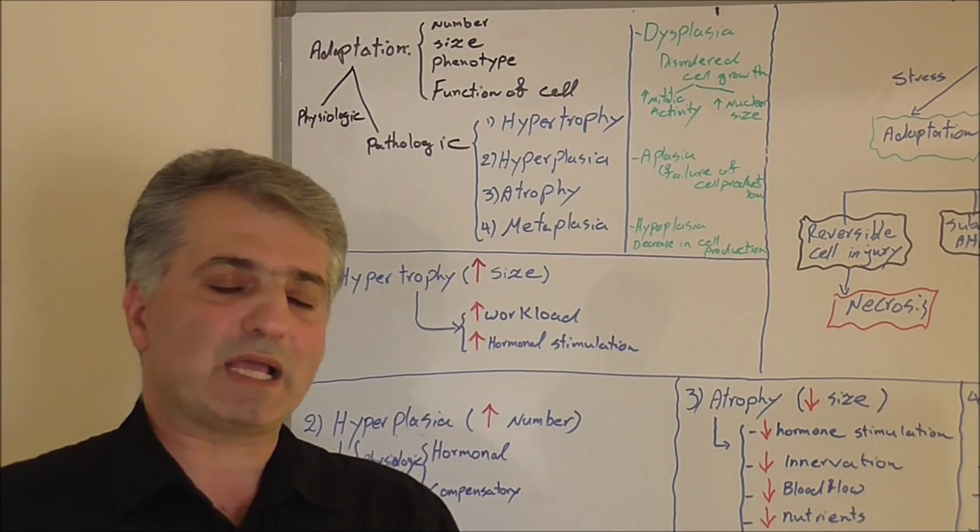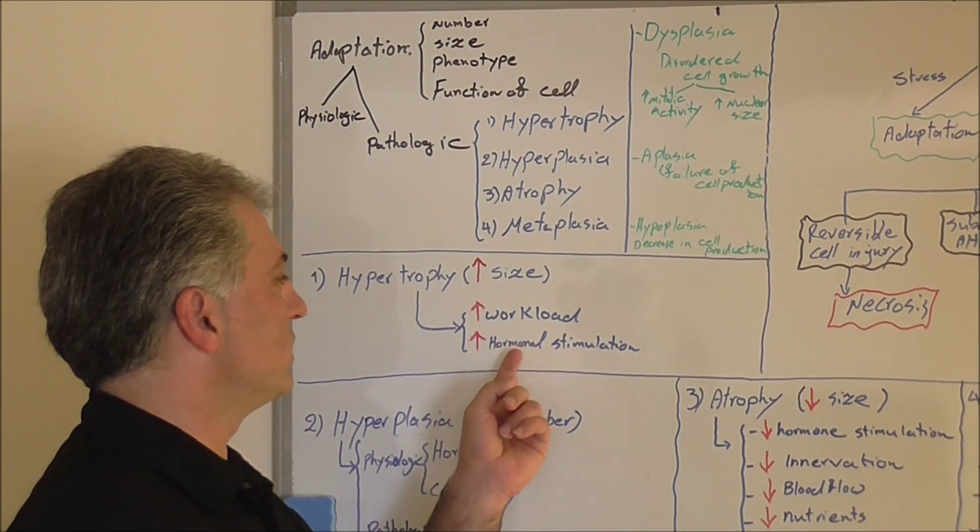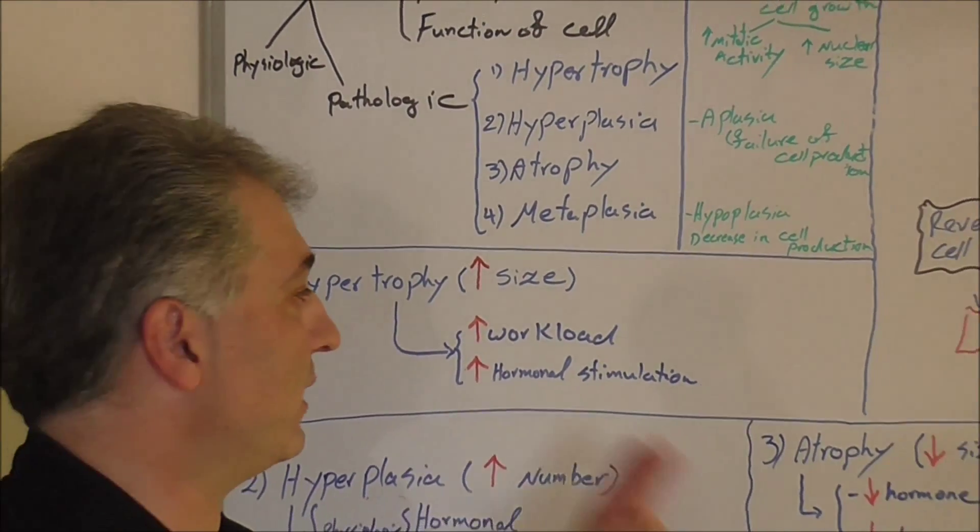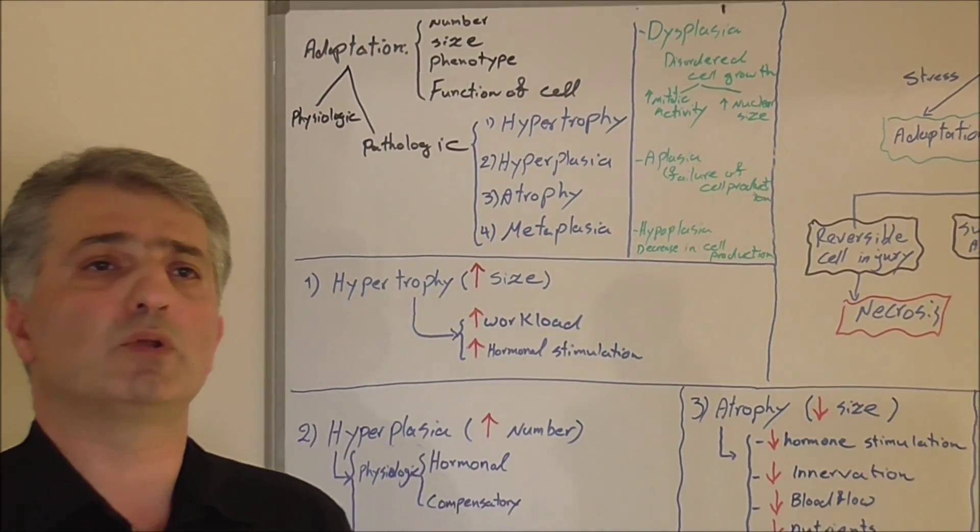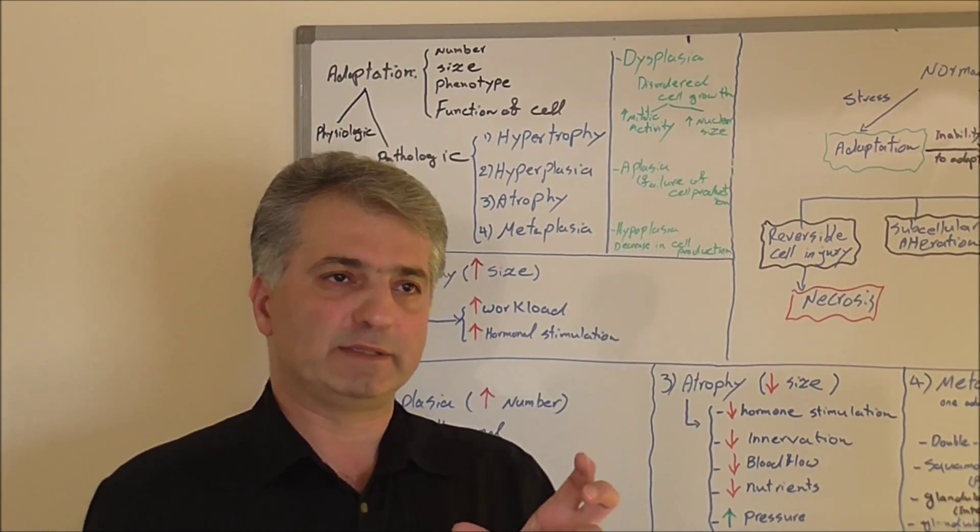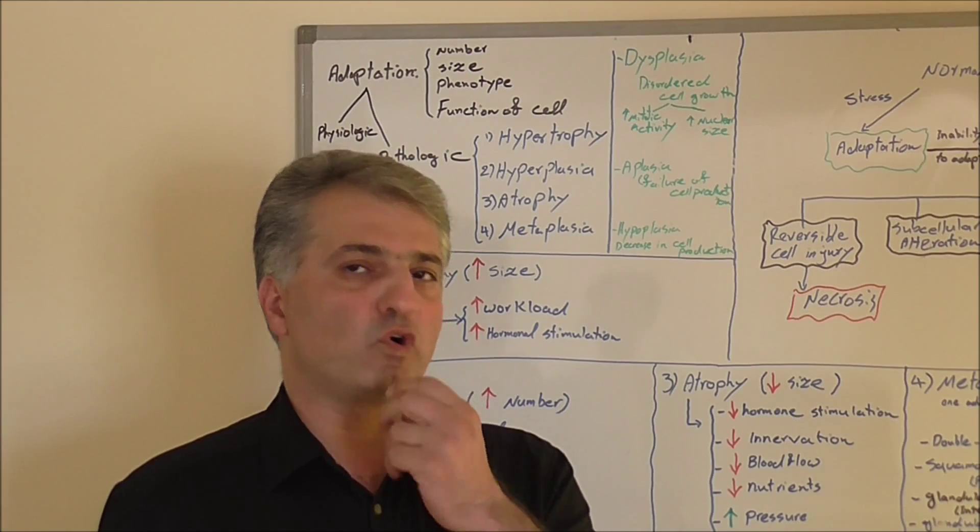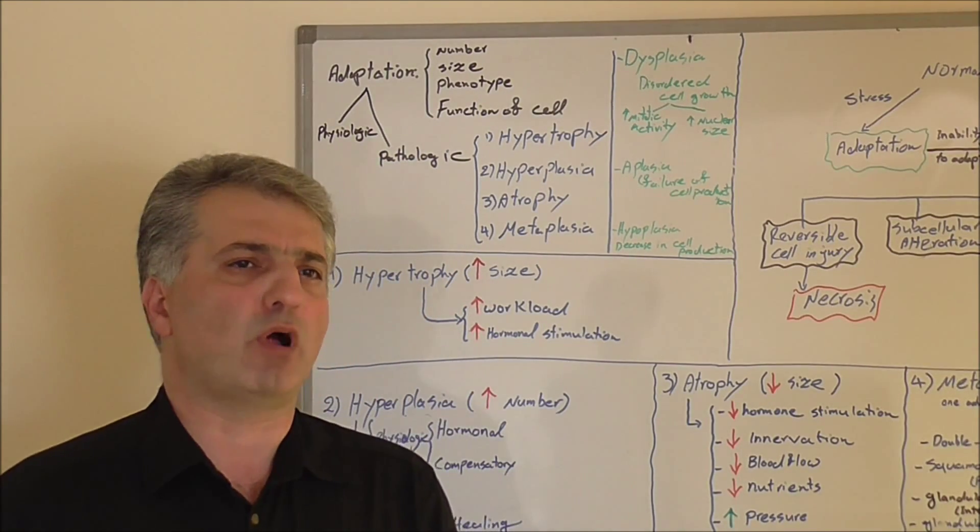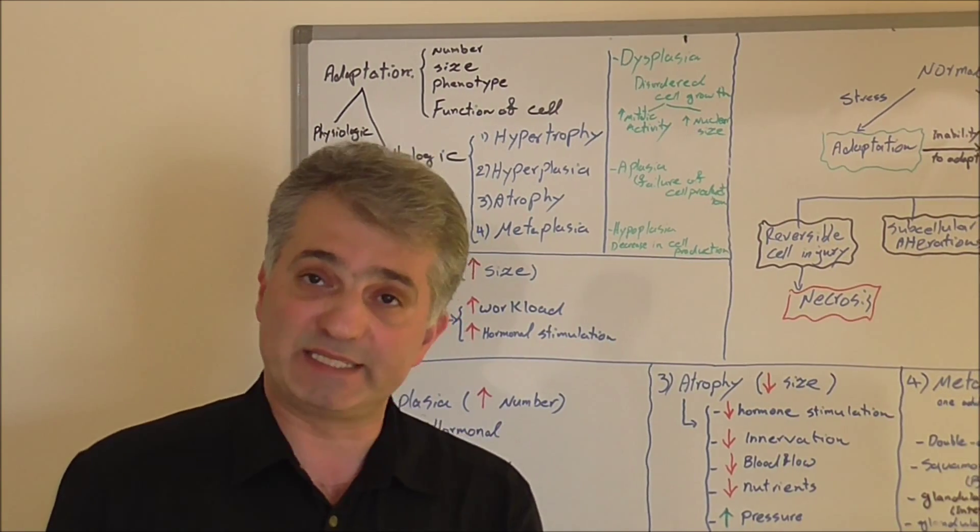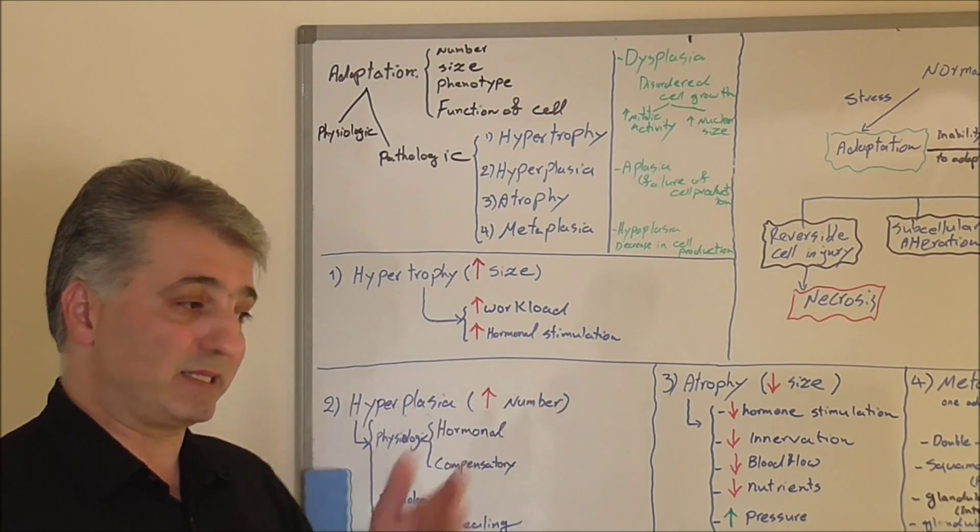What causes hypertrophy? We can classify two major things: workload or hormonal stimulation, or both of them. Workload, for example, skeletal muscle, or workload for the heart left ventricle. The heart will be hypertrophic if the workload is high. What can cause too much workload for the heart? One very common disease is hypertension. When the heart is trying to push blood against too much pressure because of hypertension, definitely workload will increase.